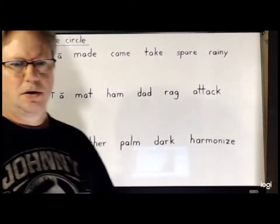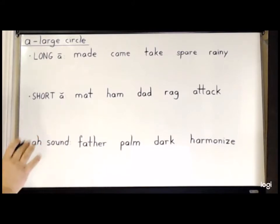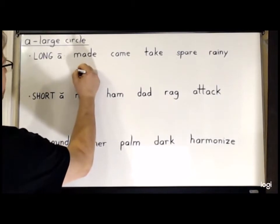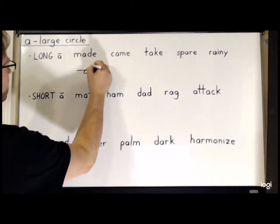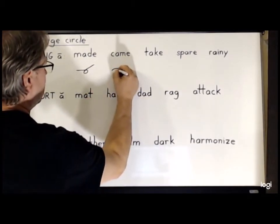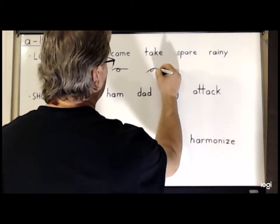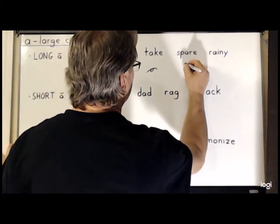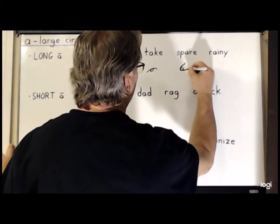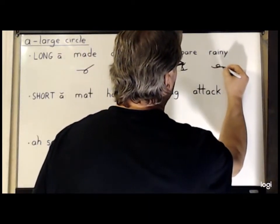First, we will start with the A, which is represented by a large circle. We will work on the long A sound. So for 'made', we just write M-A-D; for 'came', K-A-M; 'take', T-A-K; for 'spare', the left S-P-A-R; and for 'rainy', R-A-N-Y.